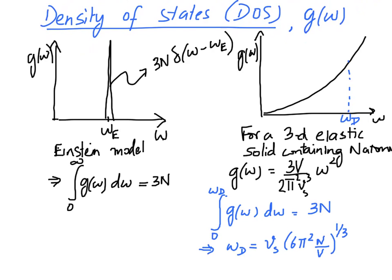The upper limit of that integration is what we refer to as the Debye frequency ωD. We choose ωD such that the integral works out to 3N. Evaluating this integral using our expression for G(ω), ωD is a function of the velocity of sound in the medium and N/V — which is essentially the number density of atoms, with N being the number of atoms and V the volume.